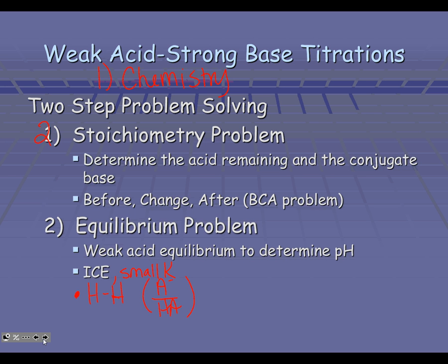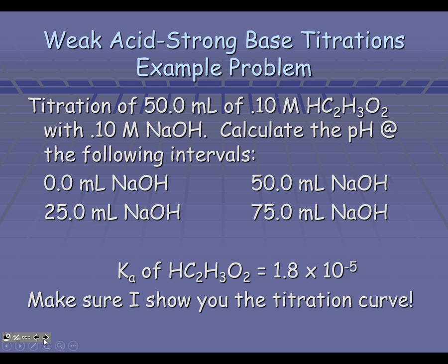Henderson-Hasselbalch can make our problems a little bit faster to work. So let's try a weak acid, strong base titration. We're going to take 50 milliliters of 0.1 molar acetic acid and react it with sodium hydroxide. We have four intervals to calculate the pH at: 0, 25, 50, and 75 milliliters of sodium hydroxide. The Ka value is posted there for you because we do have a weak acid, and back in class I'll show you the titration curve.